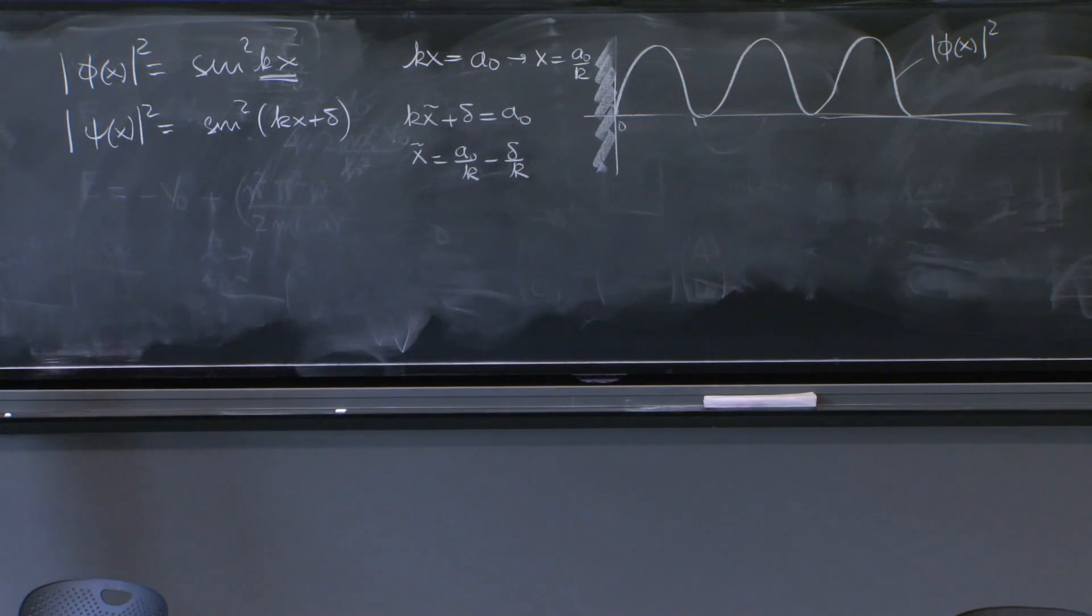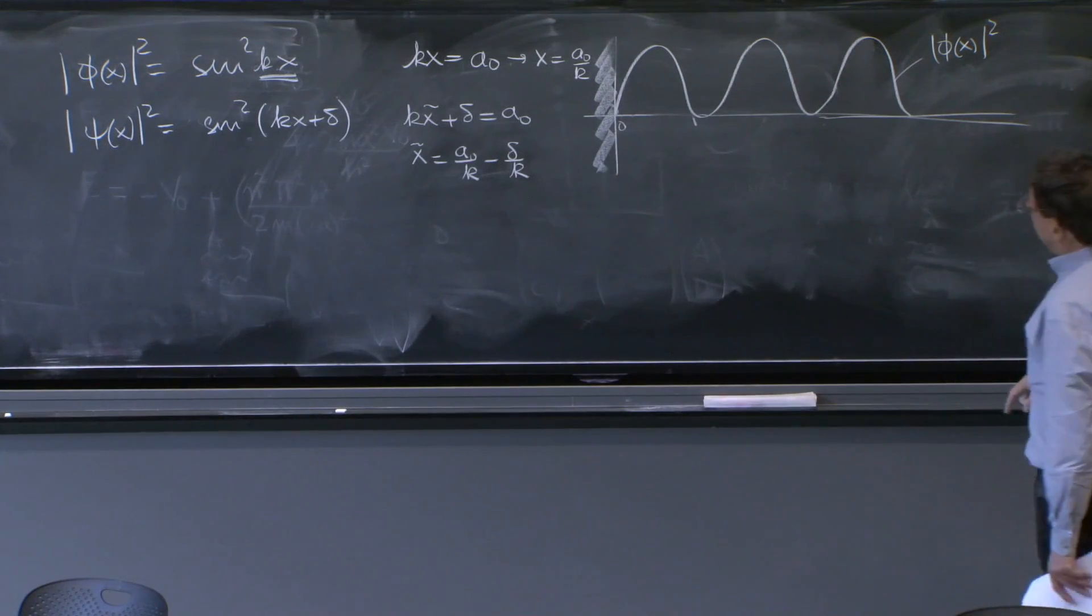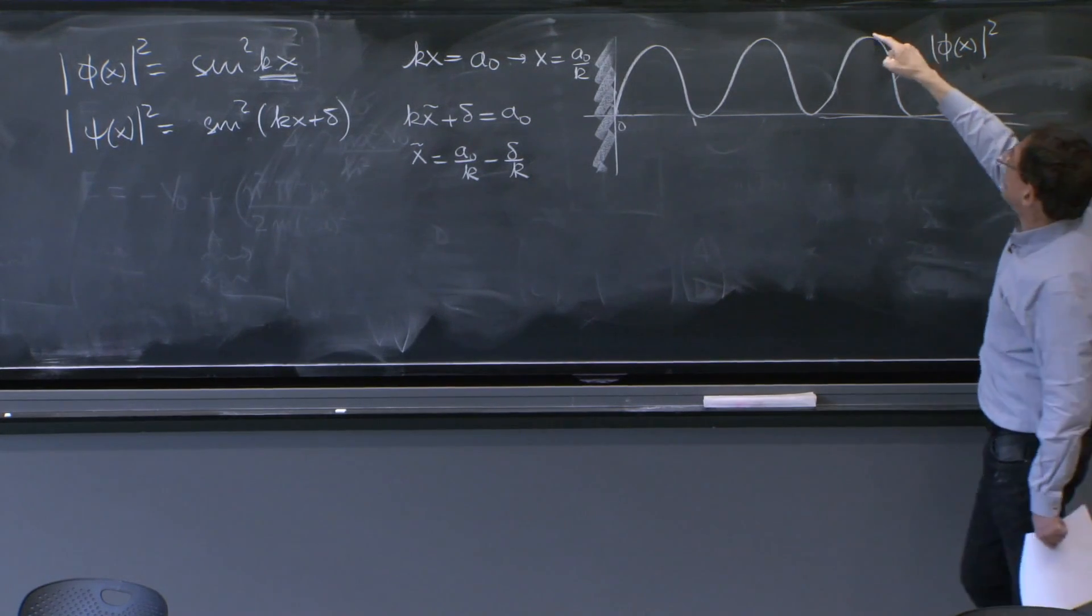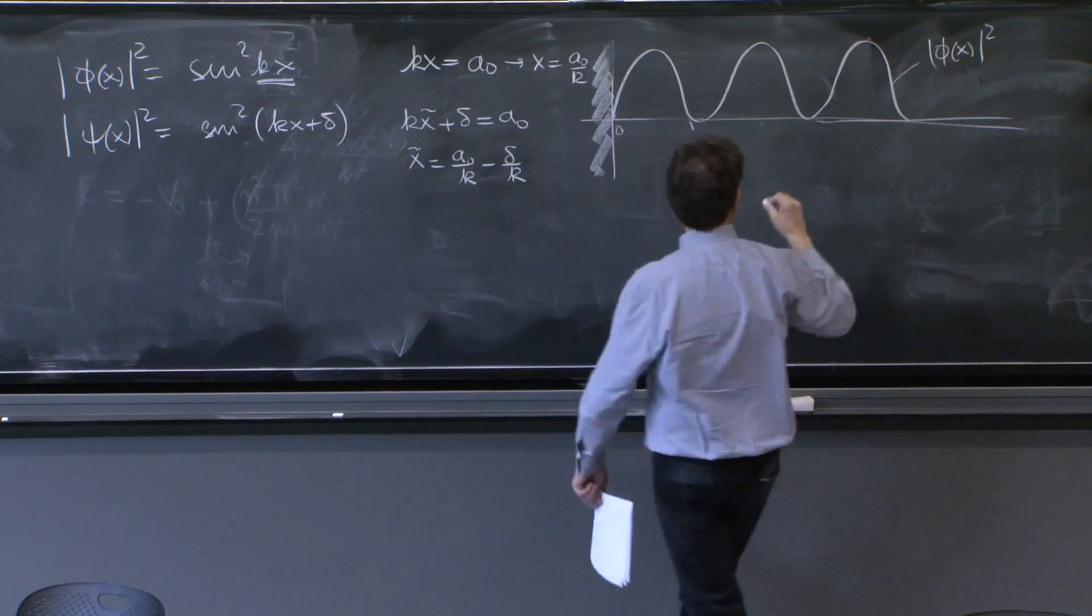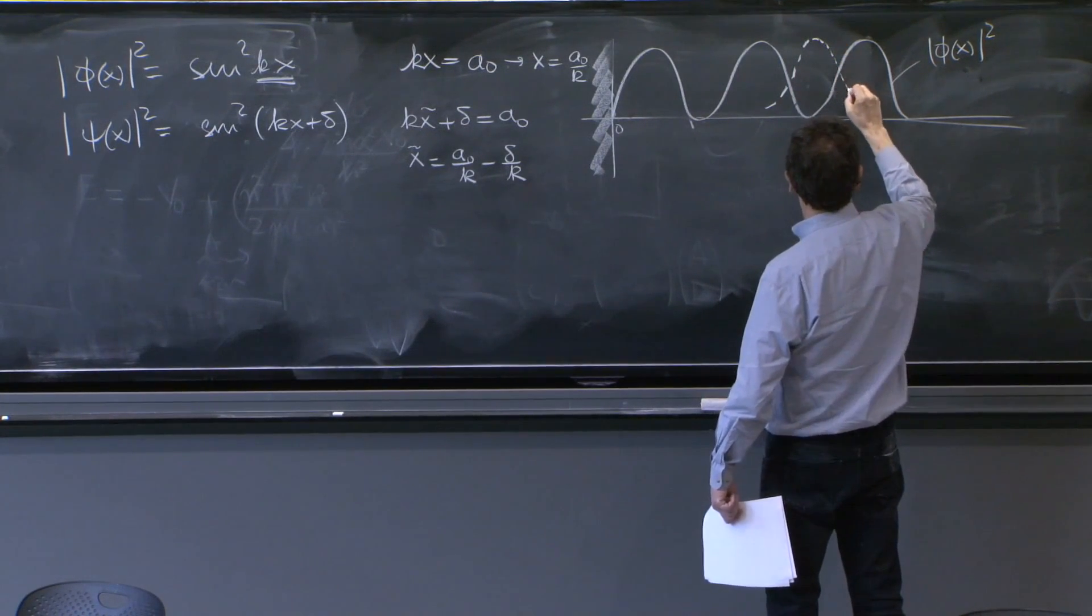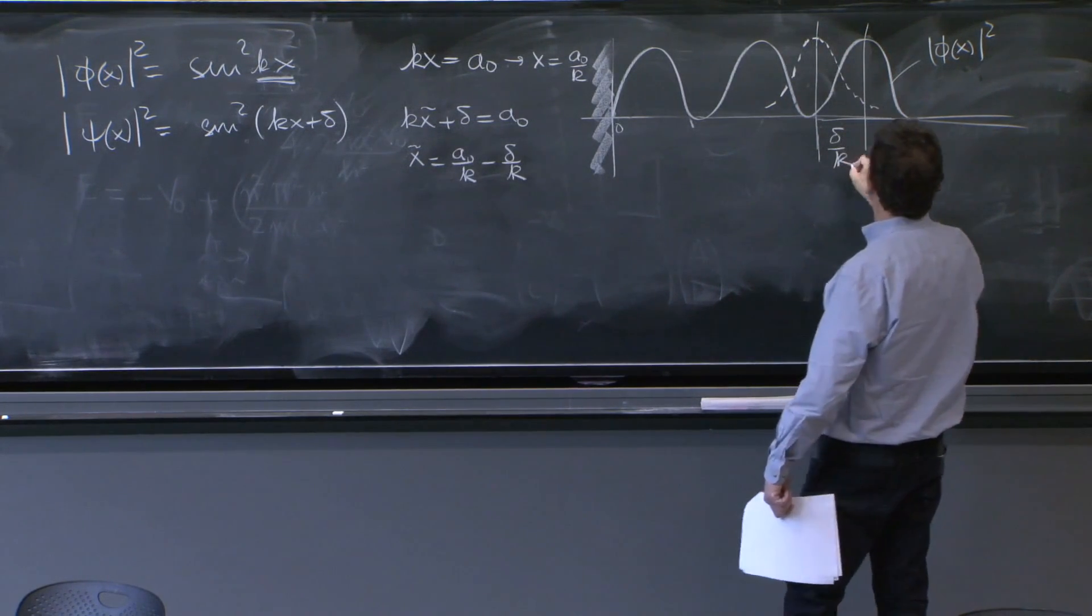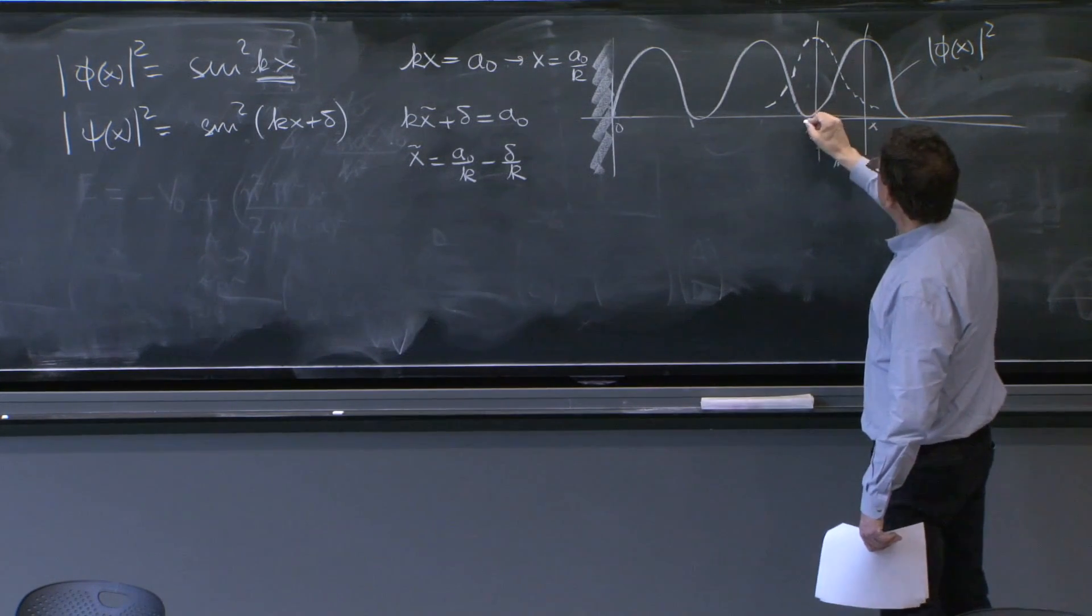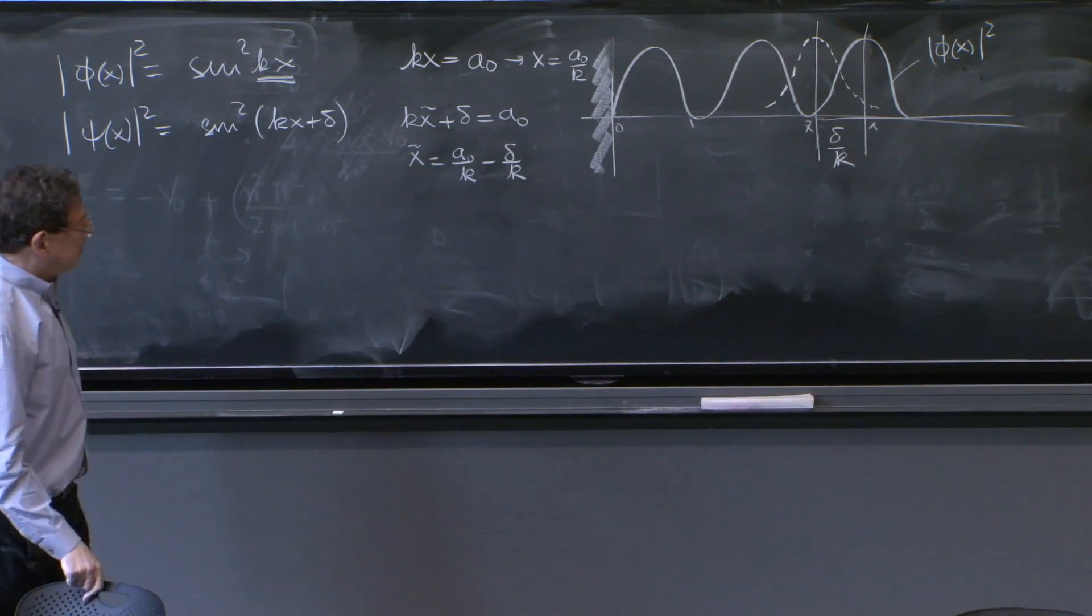So if this is the probability density associated to the solution for no potential, and it has a maximum here, well, the maximum of the true solution, say here, would appear at the distance equal to delta over k earlier. So this is like the x, and this is like the x tilde. That feature would appear delta over k in that direction.